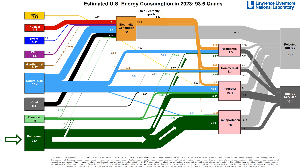The next branch up shows 8.53 quads being consumed by the industrial sector, and two smaller branches above that show 0.94 quads for the commercial sector and 0.97 quads for the residential sector. These three sectors are using petroleum mainly for heating, whether for industrial process heating or for heating buildings. The final piece of this diagram is what is shown coming out of the pink end-use boxes to the right. Shown in dark gray and light gray, these bars indicate how much energy is actually being used for its intended purpose and how much energy is being rejected or wasted as exhaust.